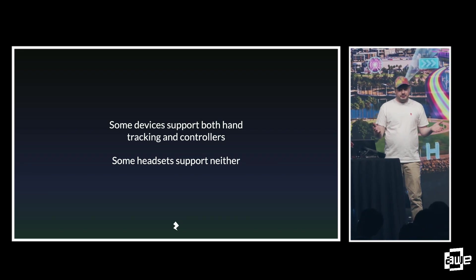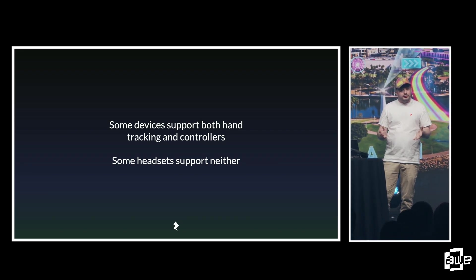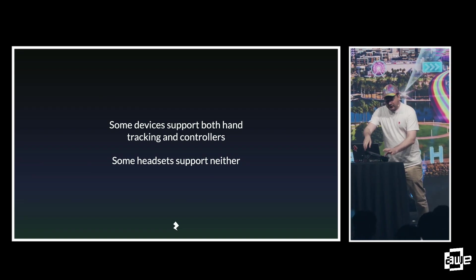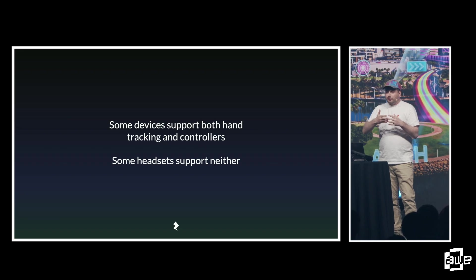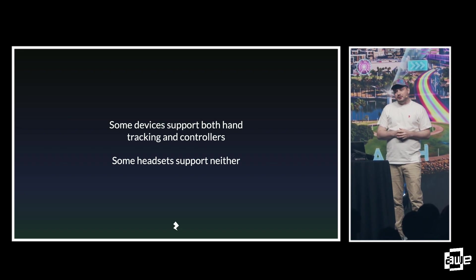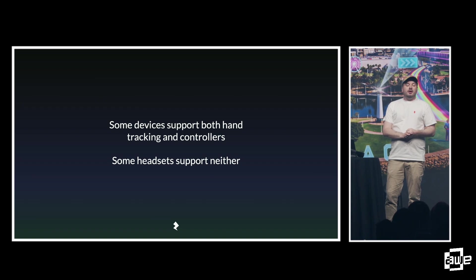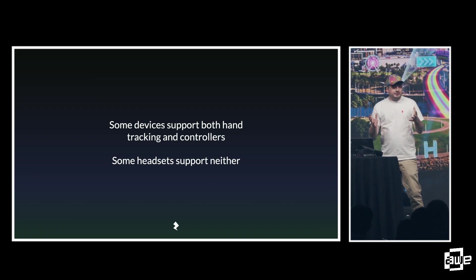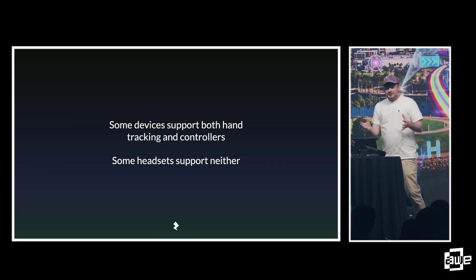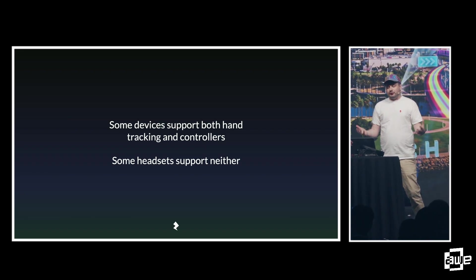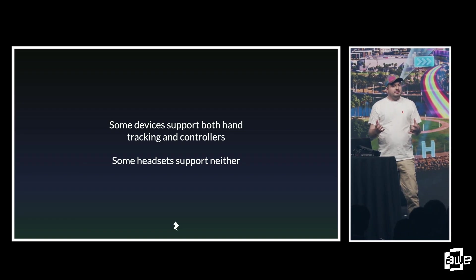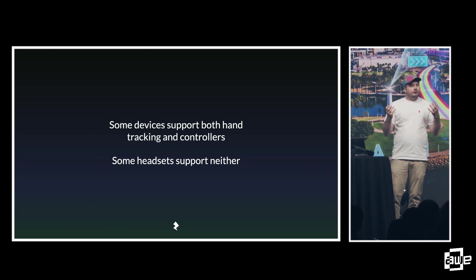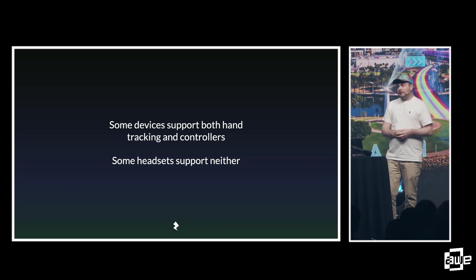Some headsets support neither. Google Cardboard — one of the inspiring technologies for Zapbox — was a cardboard headset you put your phone into to view VR experiences. Google supported WebXR for Cardboard in Chrome, but that device has no controllers whatsoever. So the challenge is: how can we build content once, as WebXR promises, and have it work across all these devices even without knowing how the user will interact?